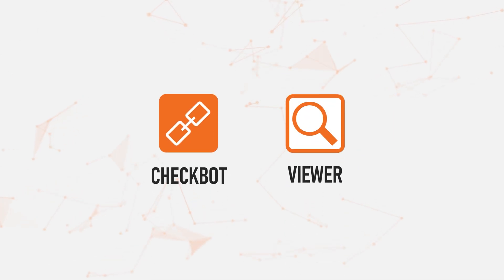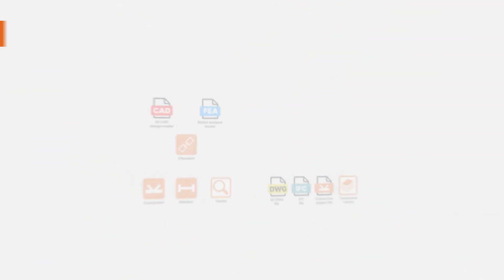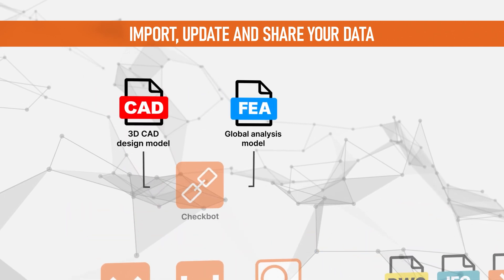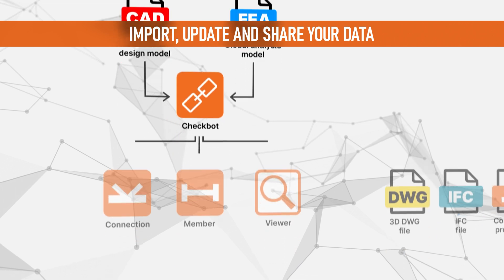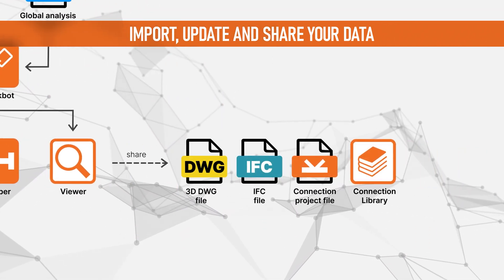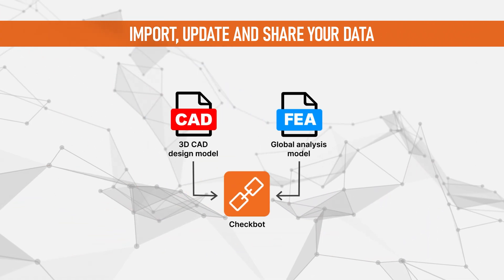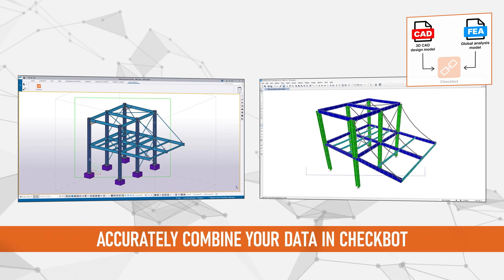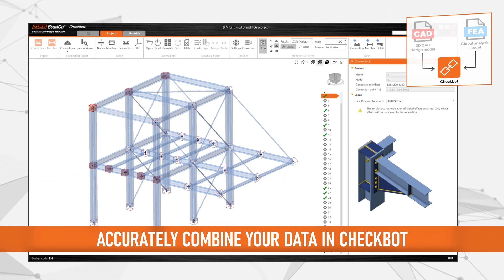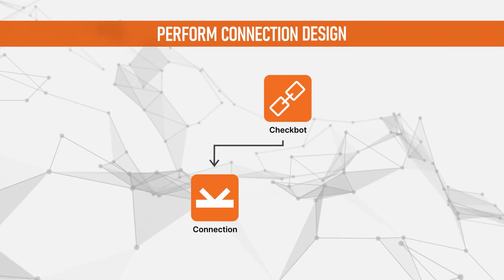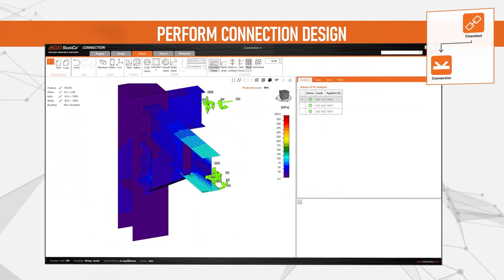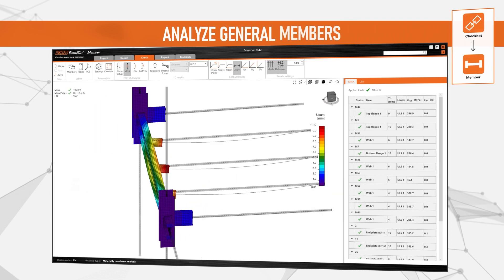With IdeaStatica's extensive BIM links, you have not one but three ways in which you can streamline your connection design workflows, allowing you to: 1. Import, 2. Update and 3. Show your data without the need for any manual data re-entry whatsoever. Design your structures in your CAD software, including all critical details such as welds, bolts, cuts and stiffeners. Once your design is ready, using our CheckBot application, you can automate the transfer of your complete design data directly into IdeaStatica.